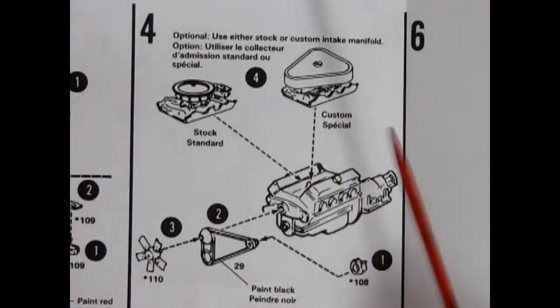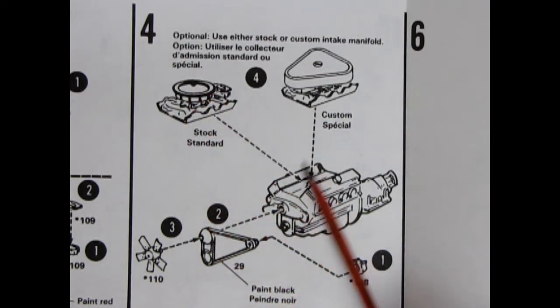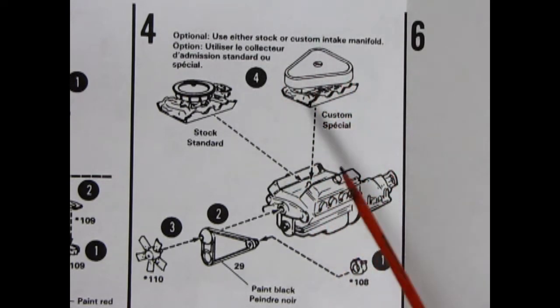Panel 4 shows our completed engine going together. Here we have of course the stock setup for the intake manifold and whatnot going on the top and then our custom version which could be in place of that. Then we have our alternator, our fans and pulleys and our fan.